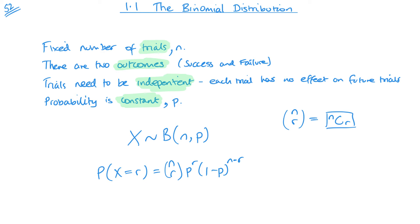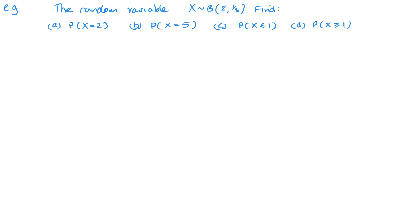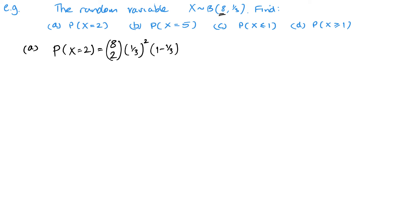Let's look at using it in a couple of examples. For part A, we want the probability when X equals two. So R is two, N is eight, giving us 8C2 for our NCR. Our probability is one third to the power two, and then one minus one third — which is two thirds — to the remaining power of six. So N minus R, and just remember these two powers will always add up to N.